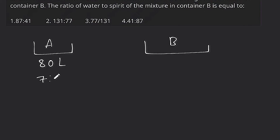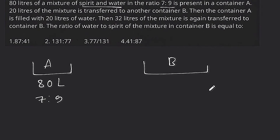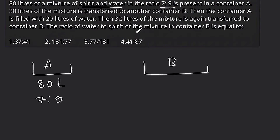20 liters of the mixture is transferred to another container B, then container A is filled with 20 liters of water. We need to find the ratio of water to spirit in container B.